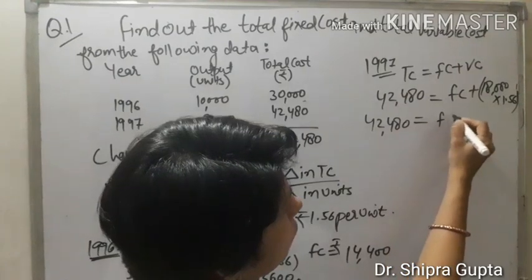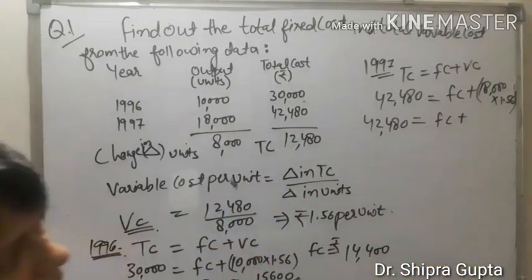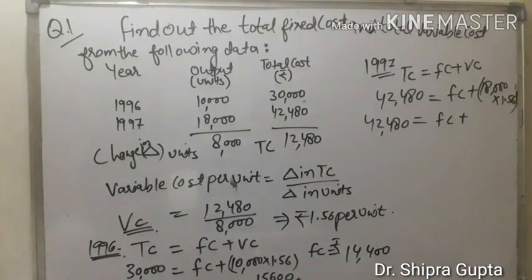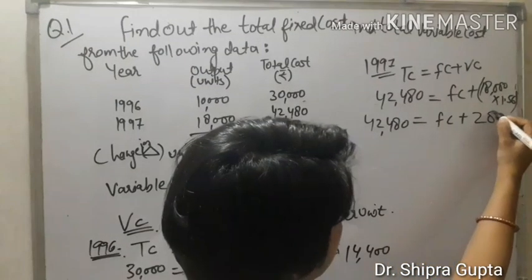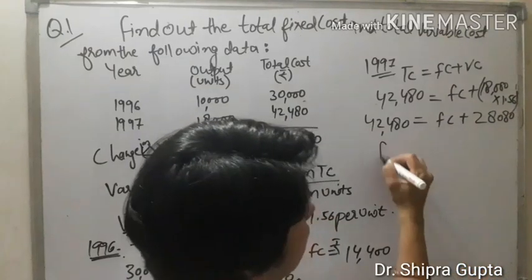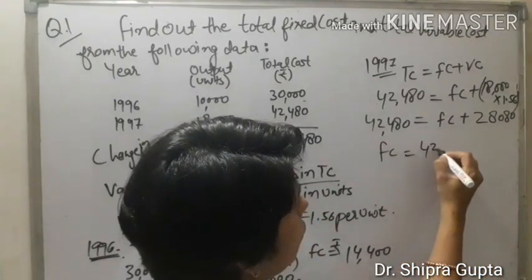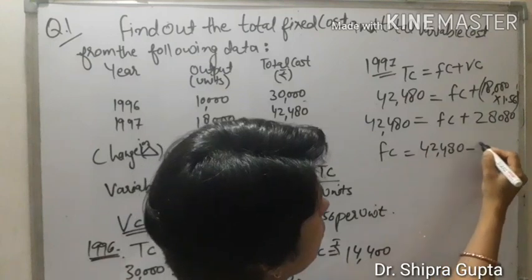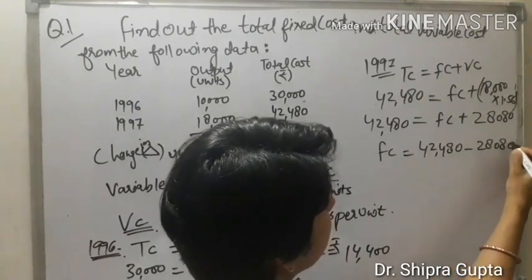42,480 equals fixed cost plus 18,000 multiplied by 1.56. The multiplication is 28,080. Fixed cost equals 42,480 minus 28,080.